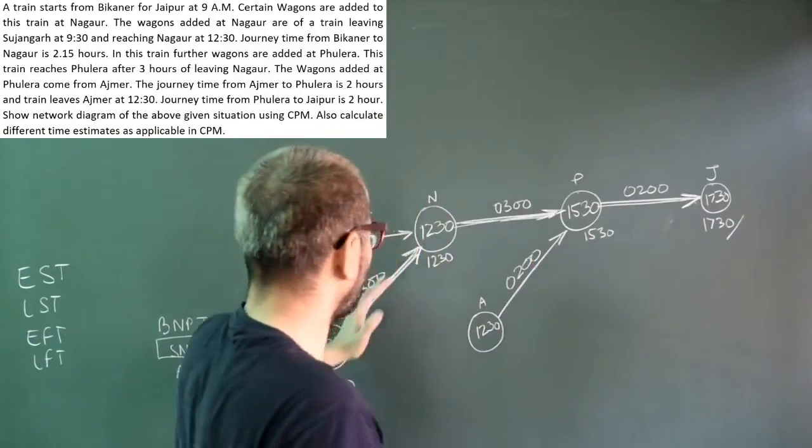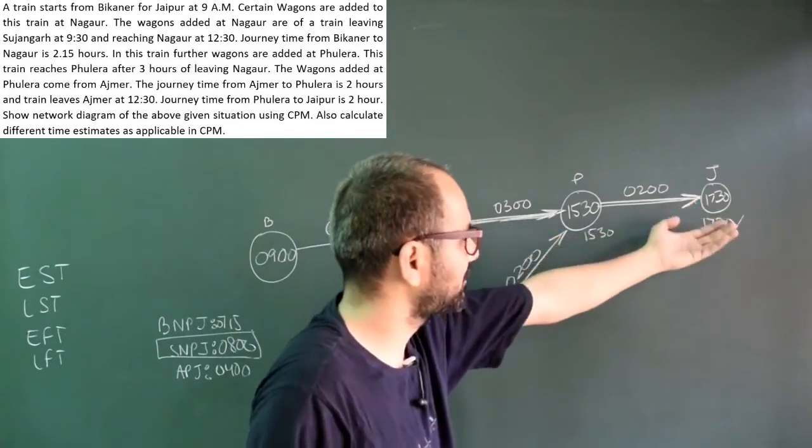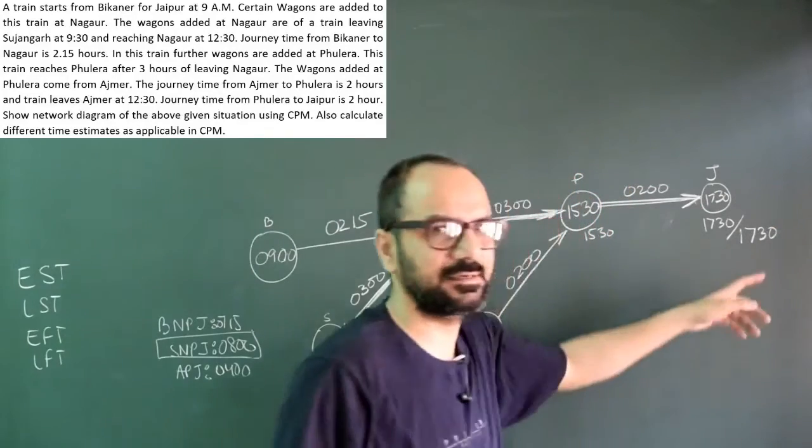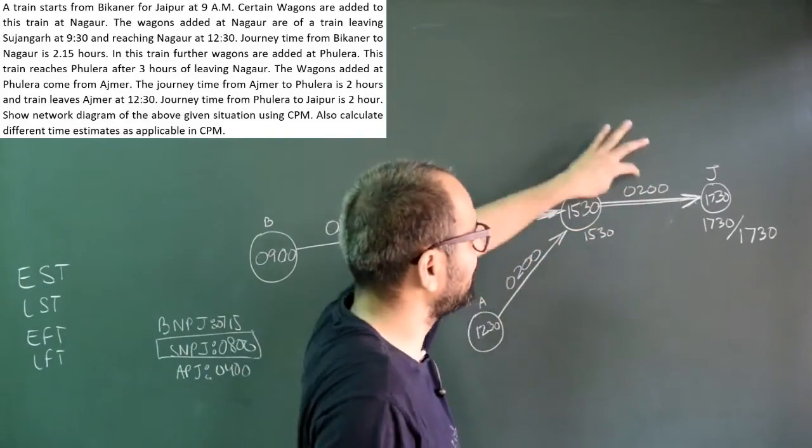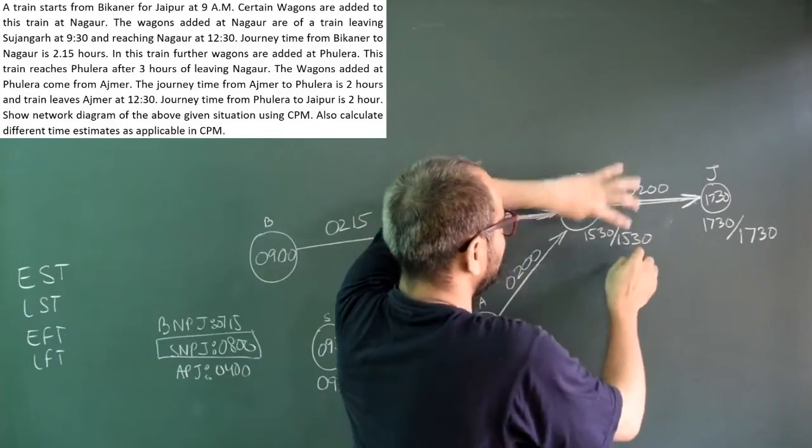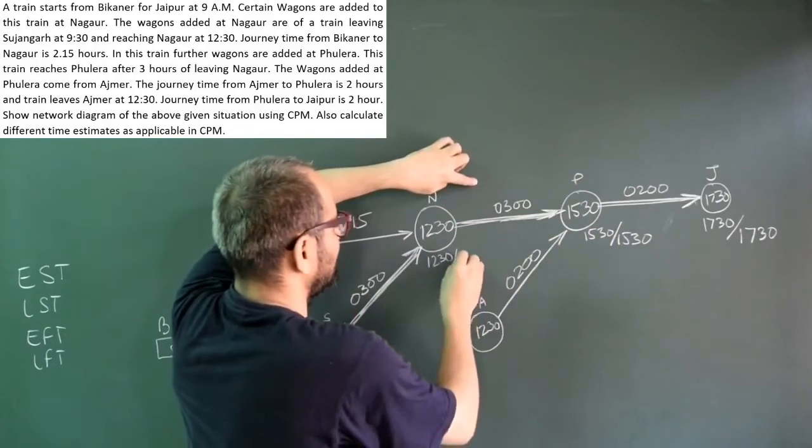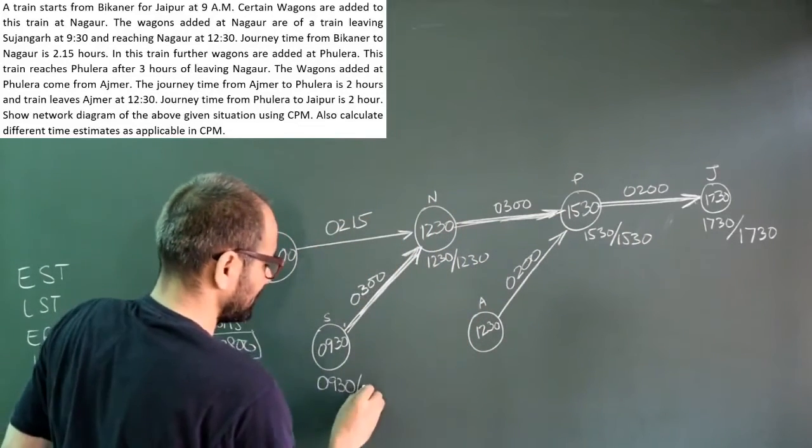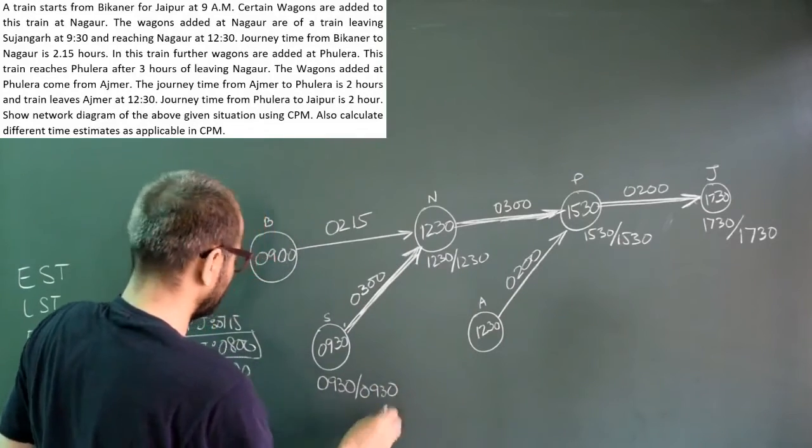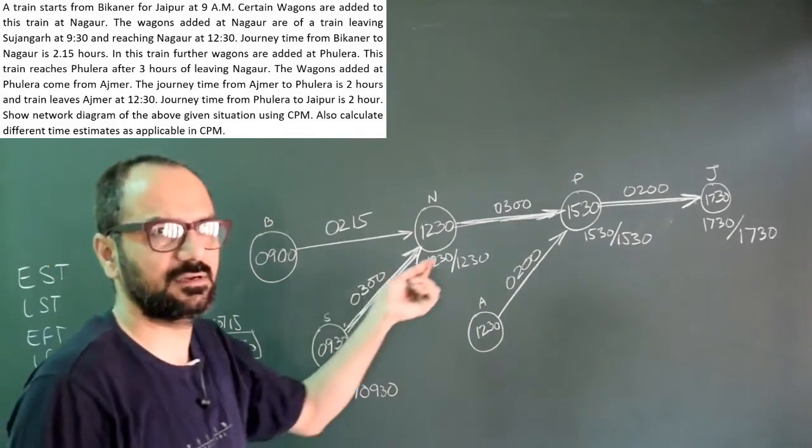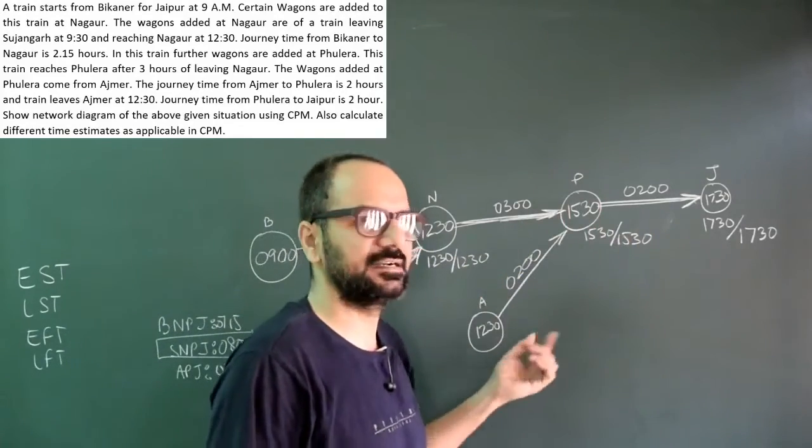Now let me start my backward pass. Being critical, it will still start with 17:30, minus 2 hours is 15:30, minus 3 hours is 12:30, minus 3 hours is 9:30. So as far as Sujanagad to Jaipur is concerned, there are no leverages. These are earliest and latest scheduled times.